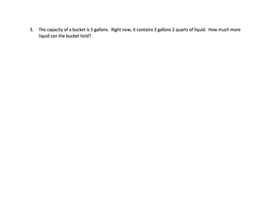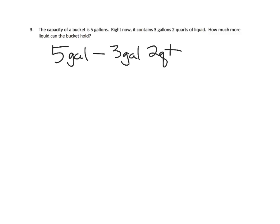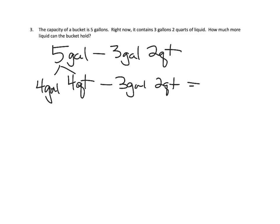Now we have a word problem: the capacity of a bucket is five gallons; right now it contains three gallons and two quarts — how much more liquid can the bucket hold? So we're solving five gallons minus three gallons and two quarts. One way is to take five gallons and rename it as four gallons plus four quarts, since a gallon equals four quarts. Now we take away three gallons and two quarts — four gallons minus three gallons gives us one gallon, and four quarts minus two quarts gives us two quarts.